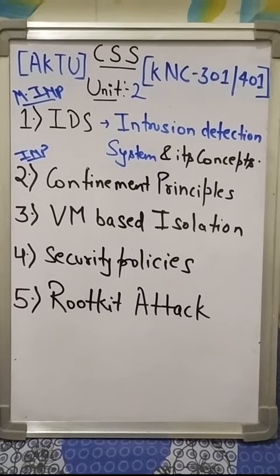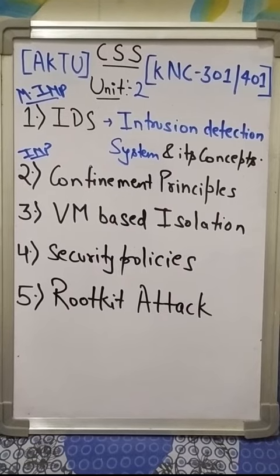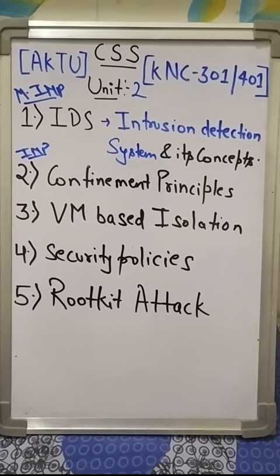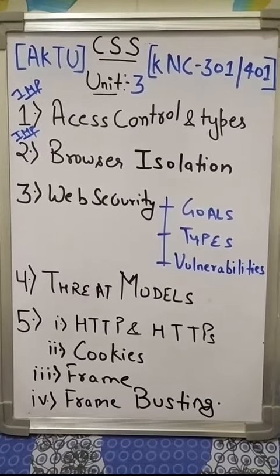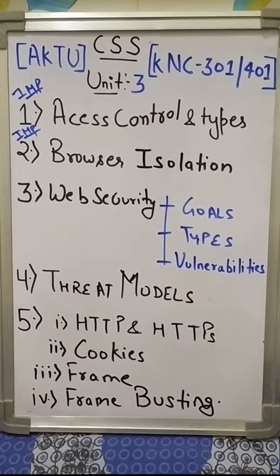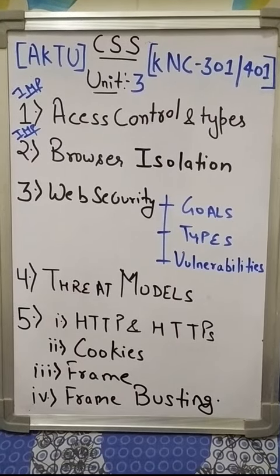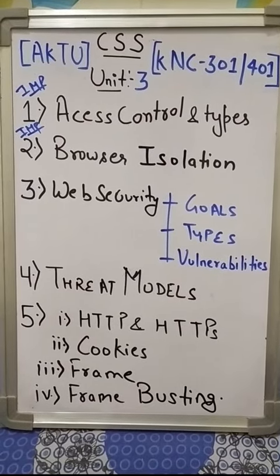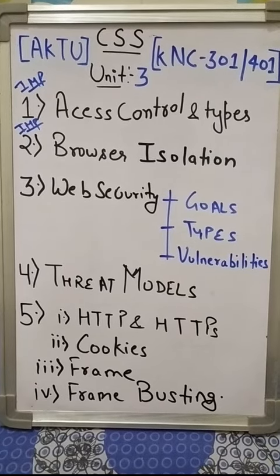Unit number two: IDS — Intrusion Detection System — and its concepts are the most important topics. The confinement principle is also an important topic in unit number two. In unit number three, access control and its types, and browser isolation, are the most important topics.